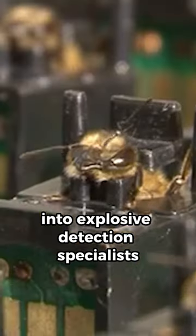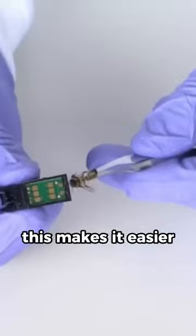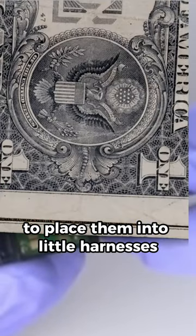These honeybees can be transformed into explosive detection specialists. After being collected from the hive, the bees are chilled in a container in the fridge to slow down their movement. This makes it easier to place them into little harnesses.